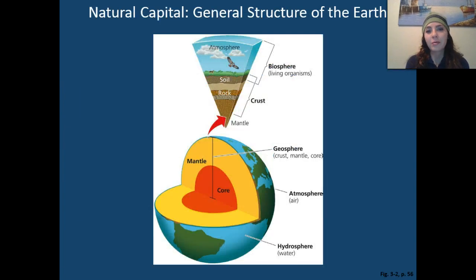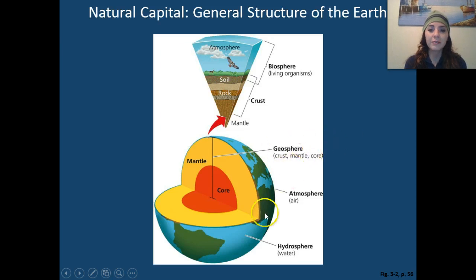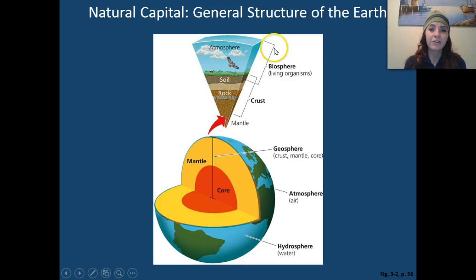Looking at the natural capital, or the general structure of Earth: we have our core, our mantle, and our crust. All of those combined form the geosphere. Our atmosphere is where the air is contained, and the hydrosphere is where we find our water on Earth. The biosphere is where we locate all of the living organisms on Earth.